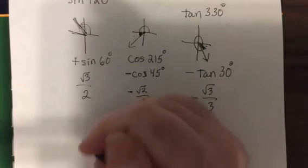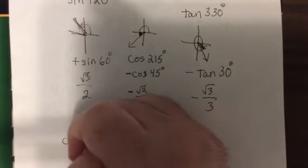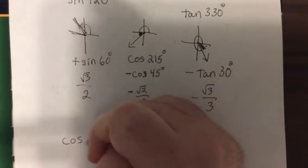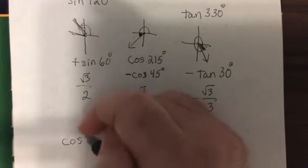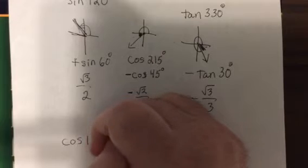See if you can find just one. All I asked is one. Do cosine of 135. Freeze the program and go ahead and try it.